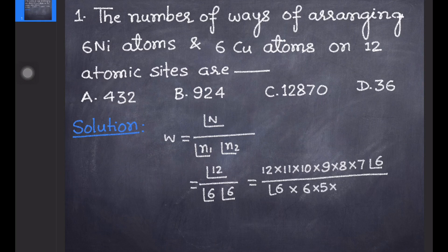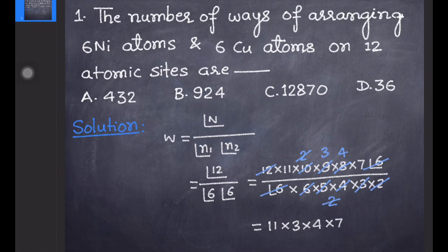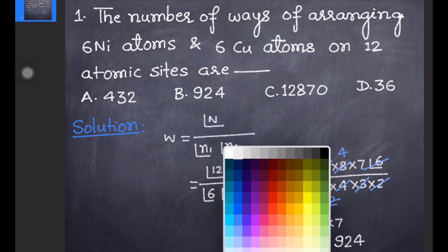The other 6! expands as 6 × 5 × 4 × 3 × 2 × 1. Cancelling terms: the 6! in numerator and denominator cancel, then 6 and 2 make 12 and cancel with 12, 3 and 9 cancel, 5 × 2 = 10 cancels, and 2 and 4 cancel. Finally we are left with 11 × 3 × 4 × 7, which gives 33 × 28 = 924.